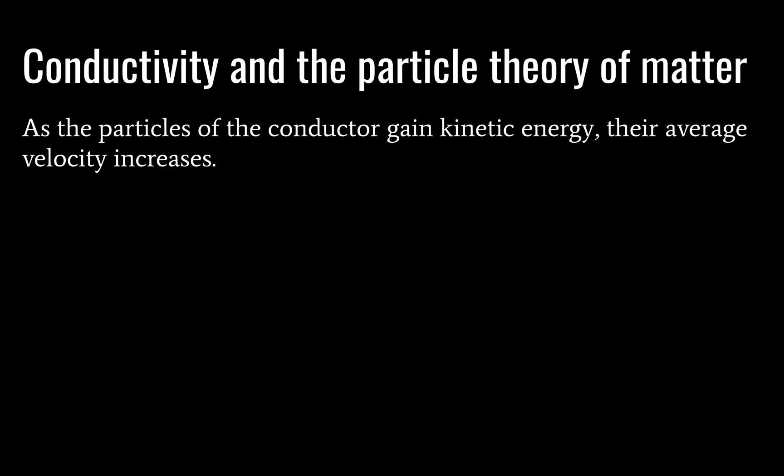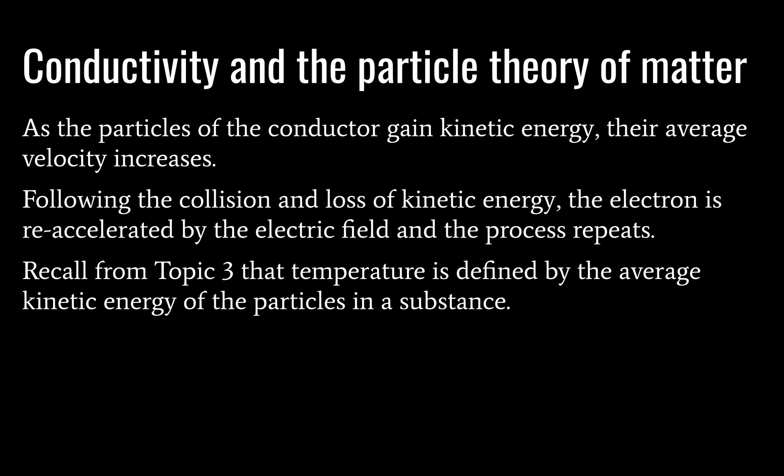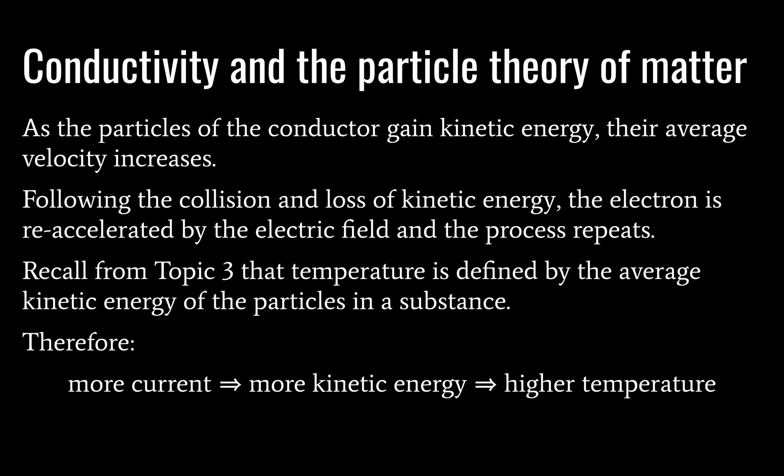When they do that, they're going to dump off their kinetic energy. As the ions in the conductor gain kinetic energy, their average velocity increases — in other words, they begin to vibrate faster and more violently. Following the collision and loss of kinetic energy, the electron will be re-accelerated by the electric field and this process repeats. Recall from topic 3 that temperature is defined by the average kinetic energy of particles in a substance. So if the average kinetic energy of the positive ions in the metal conductor increases, we will have a higher temperature. More current means more kinetic energy and a higher temperature of our conductor.